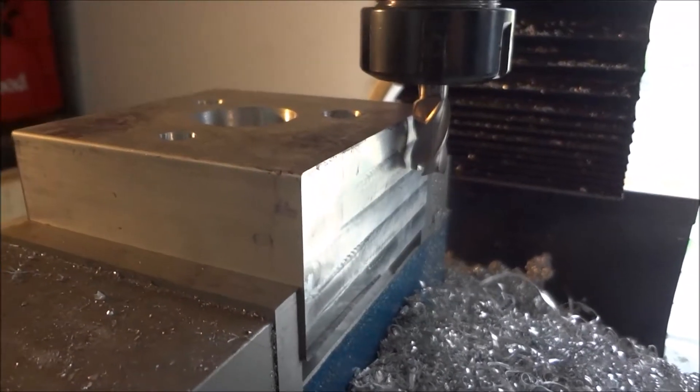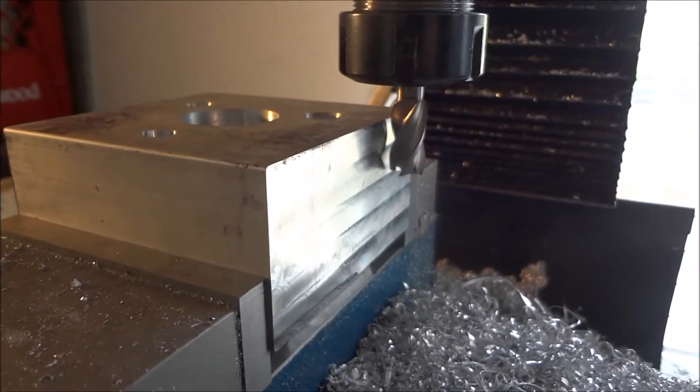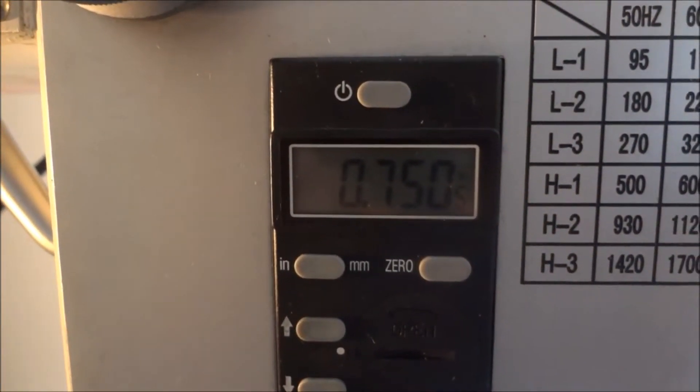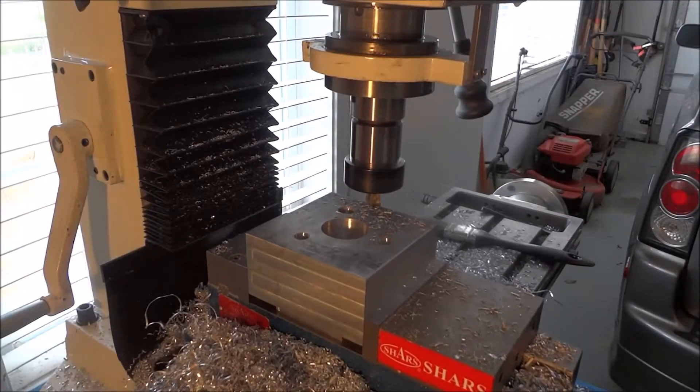Hey guys, welcome back to part two of the z-axis bearing block. I'm setting up here to do the step for the spacer and it's going to be a full depth of cut, 0.75 inches.